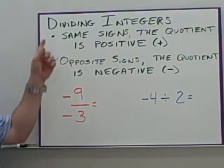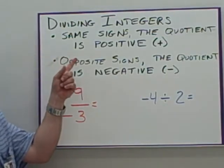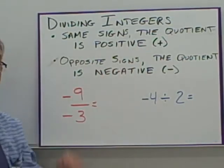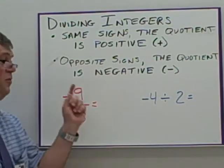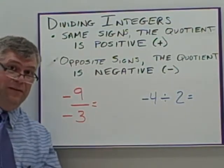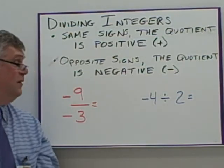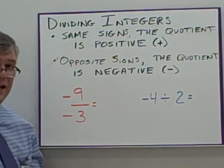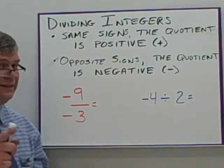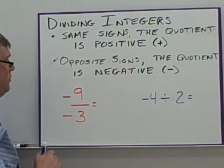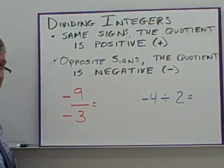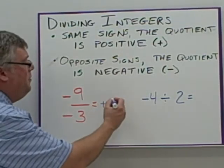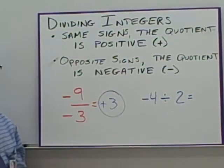Dividing integers. When you divide integers with the same signs, the quotient — or the answer in a division problem — is positive. With opposite signs, the quotient is negative. The fraction bar is a division symbol, so negative 9 divided by negative 3 — same signs — gives a positive answer. 9 divided by 3 is 3, so my answer is positive 3.